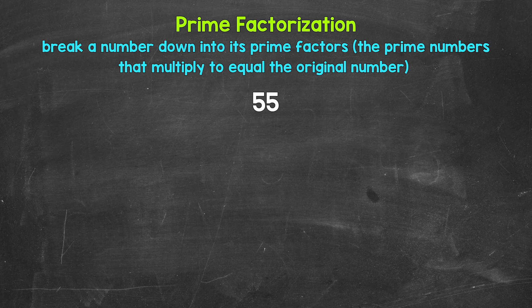Five and 11 are factors of 55. Five times 11 equals 55. So let's break 55 down into 5 and 11.